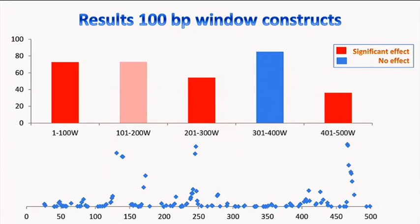We created these constructs and tested them in our system. The results look quite interesting. We got the strongest and most significant effect with the 400–500 base pair window construct, which corresponds very well to the accessible sites in that region. We have no significant effect with the 300–400 window, where there are also no accessible sites.